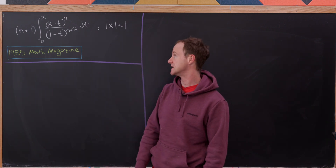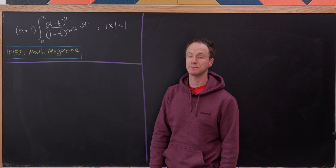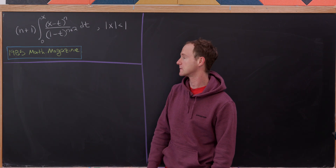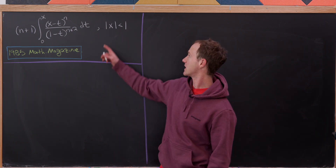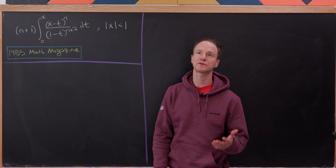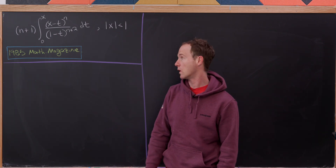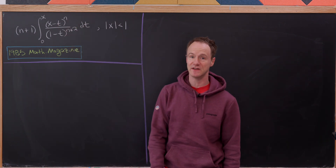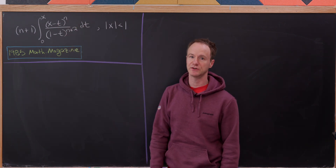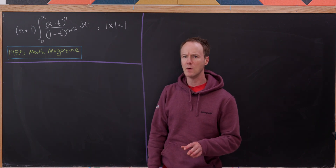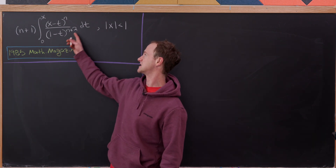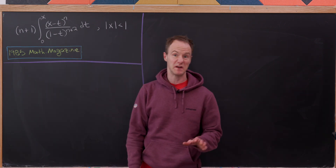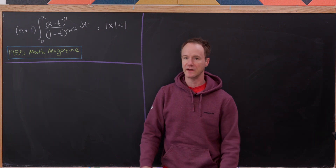We have n plus 1 times the integral from 0 to x, with x minus t to the n power over 1 minus t to the n plus 2 power. Note that x is between negative 1 and 1, which means the t values inside the integral are also between negative 1 and 1. That motivates us to expand the denominator as a power series.